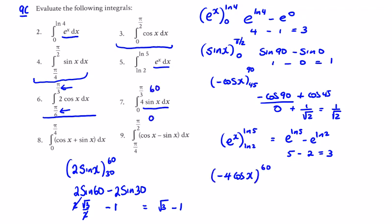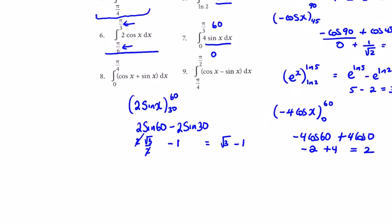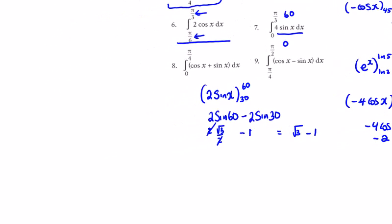For number 7, 4sin x integrates to minus 4cos x, evaluated between 60 and 0. So it's minus 4 times cos of 60, minus minus 4 times cos of 0. Cos of 0 is 1, and cos of 60 is a half, so 4 times a half is 2. That gives minus 2 plus 4, which equals 2.